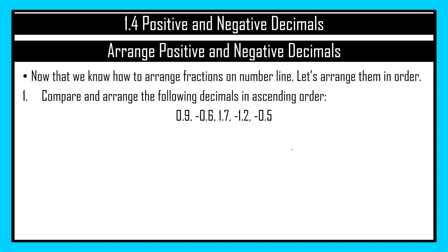Let's look at arranging positive and negative decimals. You already learned that we need to arrange in ascending and descending order. In this example, the numbers are to be arranged in ascending order. Ascending order means from smallest to largest.